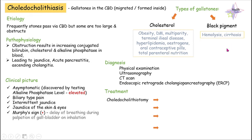Let's see how we can diagnose choledocholithiasis. We have the basic diagnostic methods: physical examination, ultrasonography, CT scan, and endoscopic retrograde cholangiopancreatography, also known as ERCP.